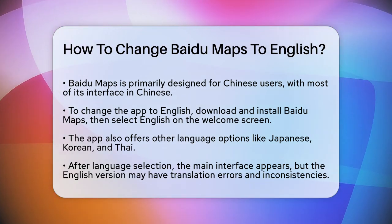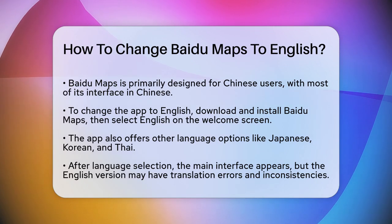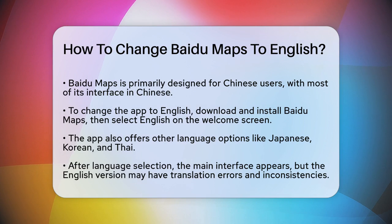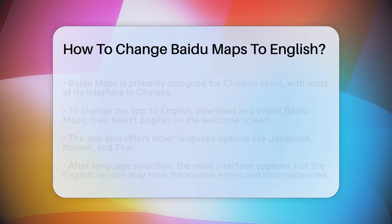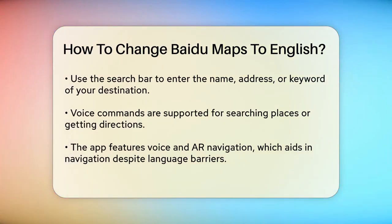When you download and install the Baidu Maps app, you'll see a welcome screen that asks you to choose your language and location. Here, you can select English as your language option, along with other languages like Japanese, Korean, and Thai. You can also choose to use the app in simplified or traditional Chinese characters if you prefer.